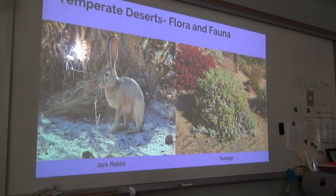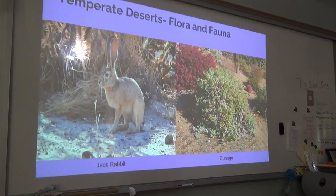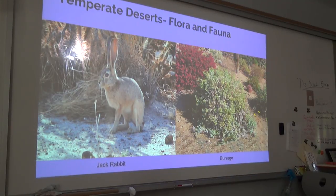When it comes to flora, plants are typically xerophytic vegetation, meaning they need very little water. Plants such as sagebrush, cacti, mesquite, and bursage are typical in the temperate desert. Some plants have developed characteristics such as spines or woolly hair to shade themselves from sunlight, which can significantly reduce water loss.